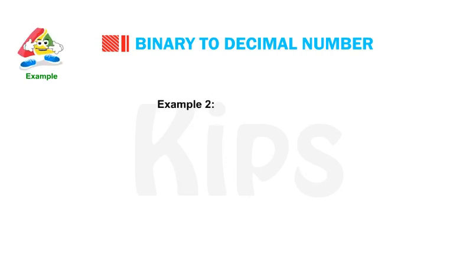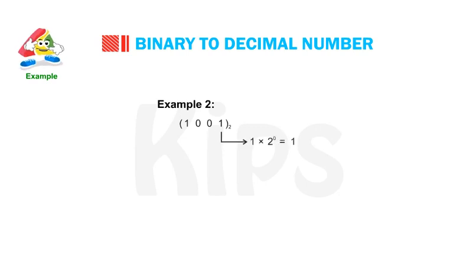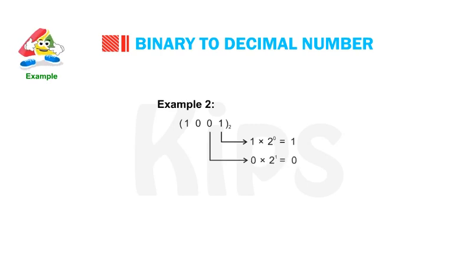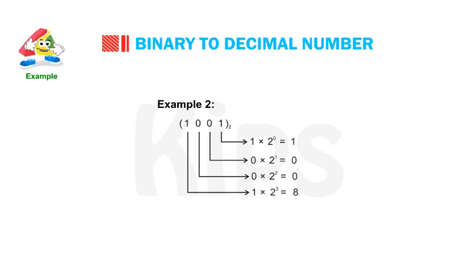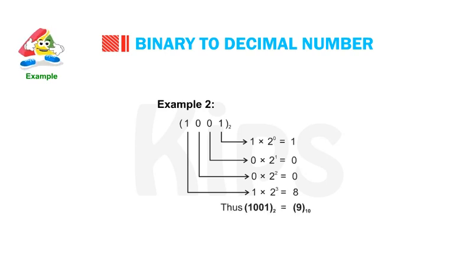Example 2: Convert 1001 in binary to decimal. From the units place we get 1; from the tens place we get 0; from the hundreds place we get 0; and from the thousands place we get 8. Thus 1001 in binary can be written as 9 in decimal.